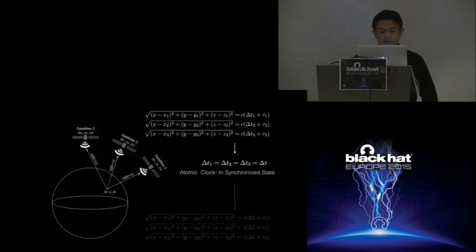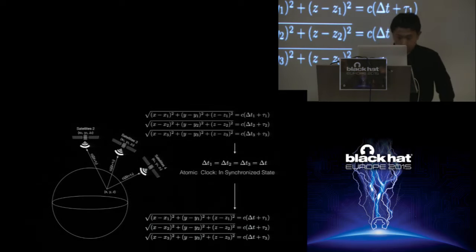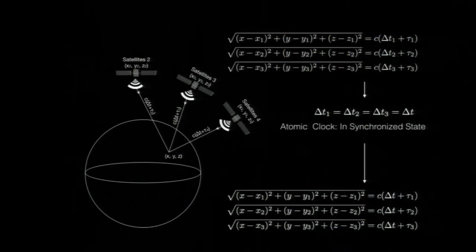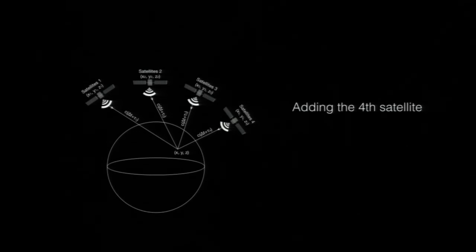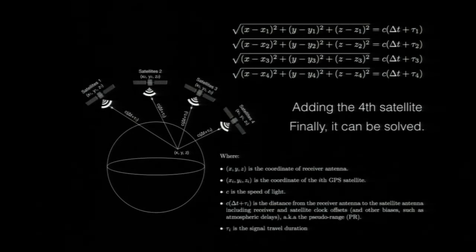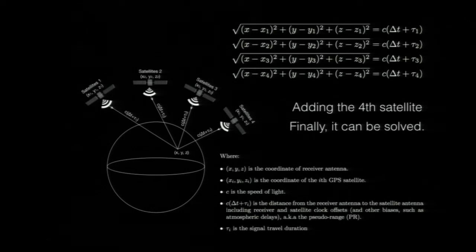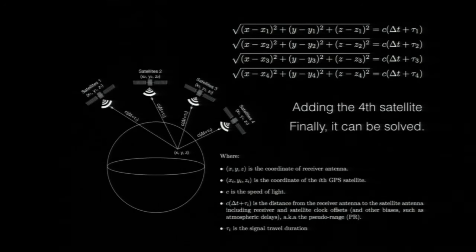We still cannot solve this equation set — we have four unknowns and only three equations. The answer is simple: we just add a fourth satellite. Now our position X, Y, Z can be solved out of the equation set. This is why at least four satellites are needed to complete the GPS positioning process. Besides, we can also calculate our local clock offset against the atomic clock in the GPS satellites, and this procedure is known as GPS time synchronization.